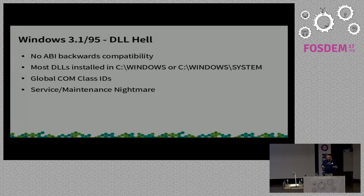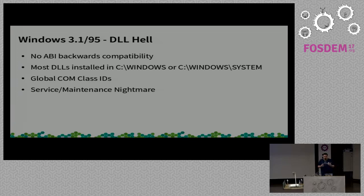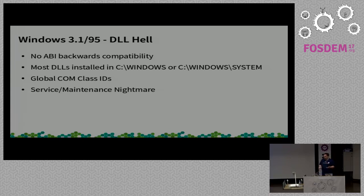Windows was trying to solve all these dependency problems and their solution was pretty much: let's have these things called DLLs and dump all these libraries into C:\Windows or C:\Windows\System, and every application will just consume them from there and everything will be wonderful. But of course, it wasn't. Nobody — not even Microsoft — took care of any kind of ABI backwards compatibility. Every single update, either from an application or from the system, goes and touches those DLLs, and then every application that relied on them ends up magically breaking.